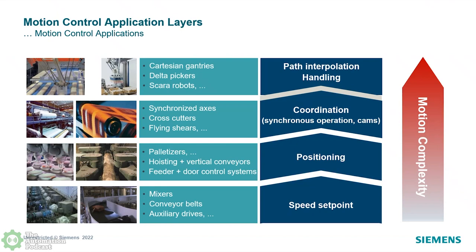At the very bottom, we always talk about the speed set point, which from a motion complexity standpoint is the simplest. You typically have your pumps and fans, your mixers, your conveyor belts — these are just on/off, go, really just speed set points. That's all you really need to care about.